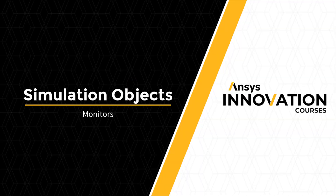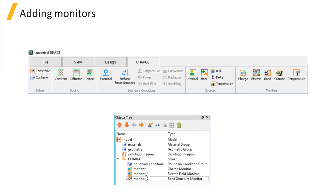In this unit, we will discuss different types of monitors available for charge simulations. Monitor objects can be added to the simulation by clicking on the corresponding buttons in the monitor section under the charge tab.